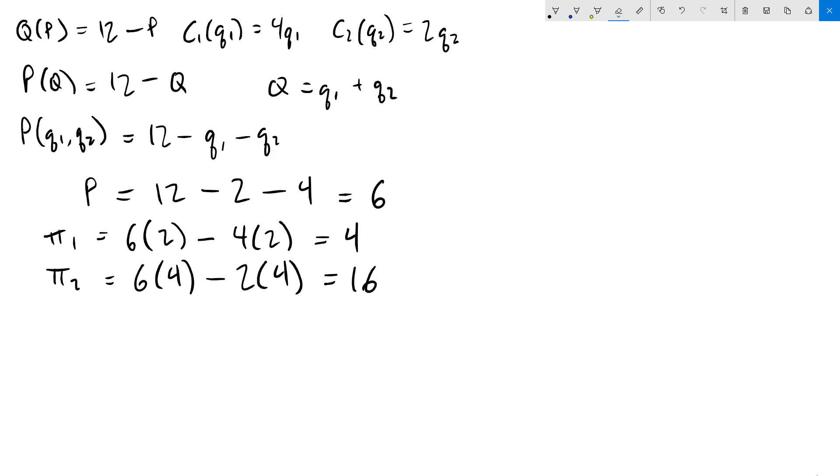The last part of the problem, part D, asks us what would happen if firm 2 bought out firm 1 and shut them down. If that happened, firm 2 would now be a monopoly, so they're going to maximize profit accordingly. Since firm 1 is not operating at all anymore, we only have one profit function. Again, we write out revenue minus cost. Their price is 12 minus big Q, since we don't have to divide them up anymore. Price times quantity minus total cost, which is 2q, which comes from firm 2's cost function. We'll multiply that out, which will give us 10q minus q squared.